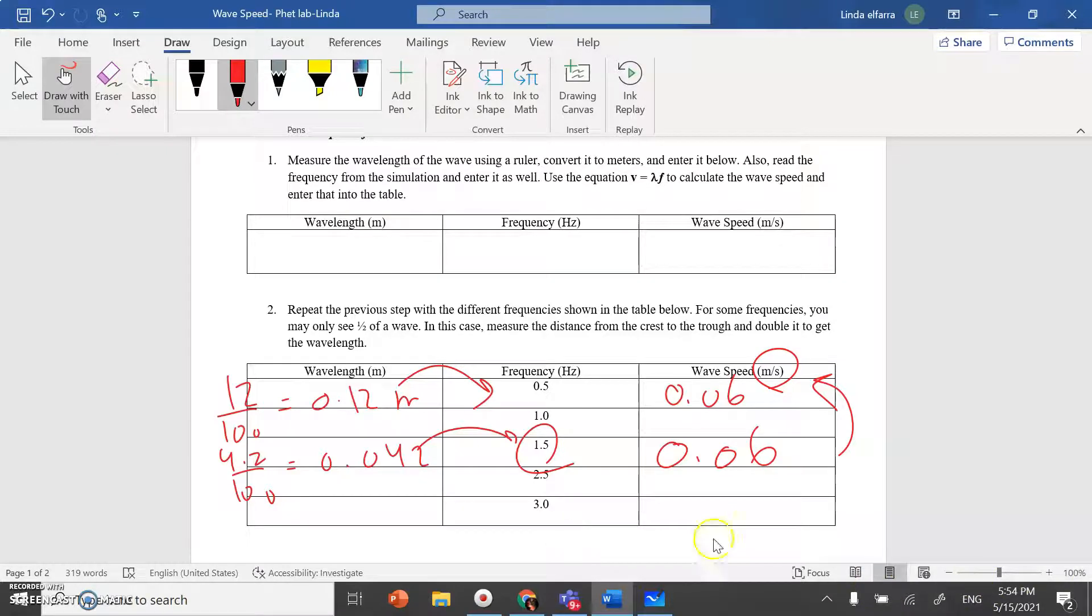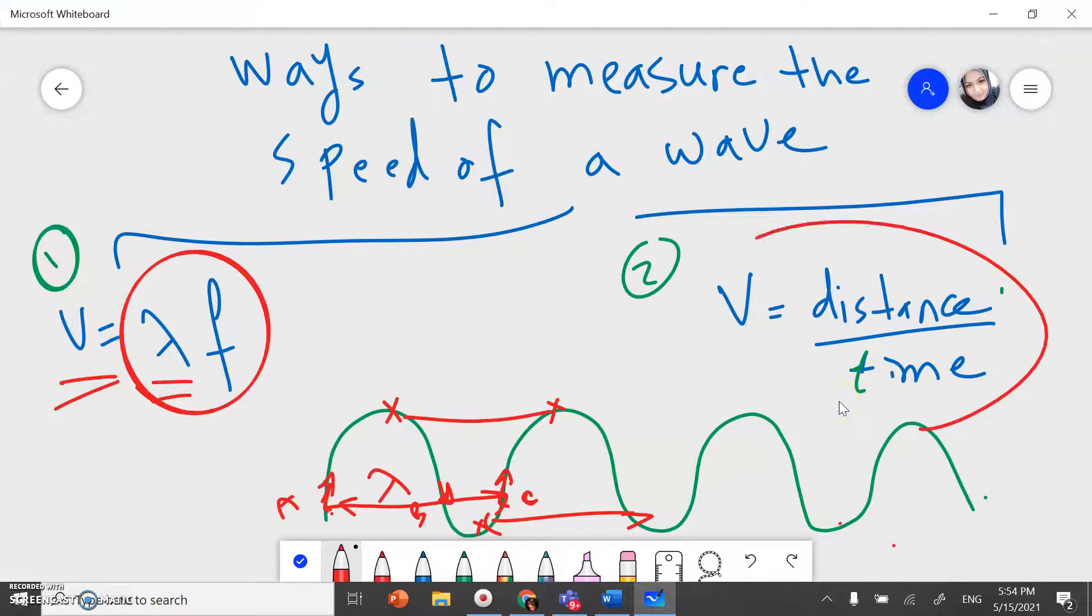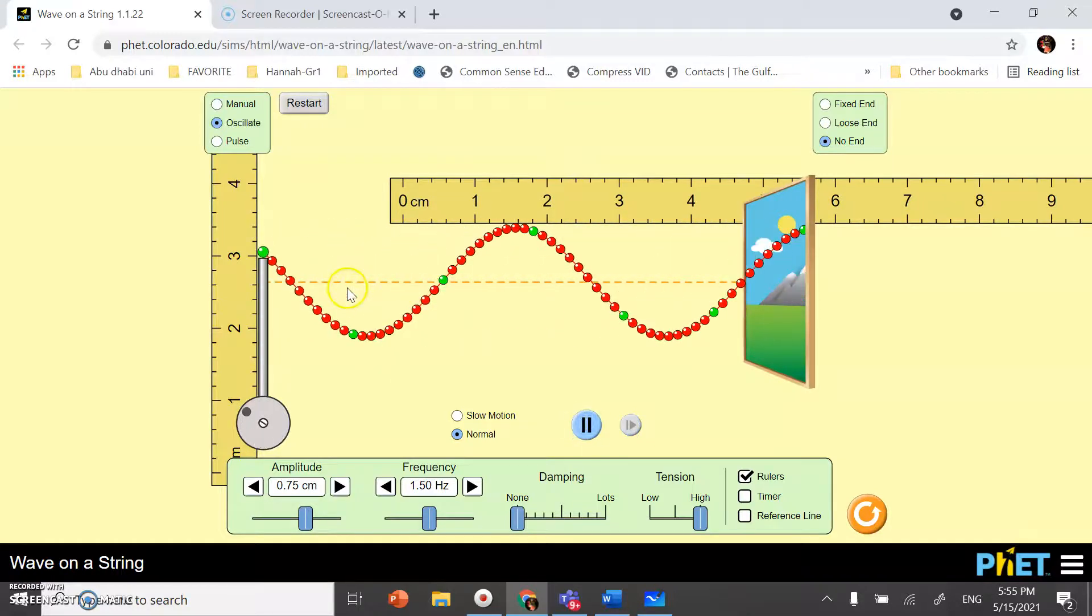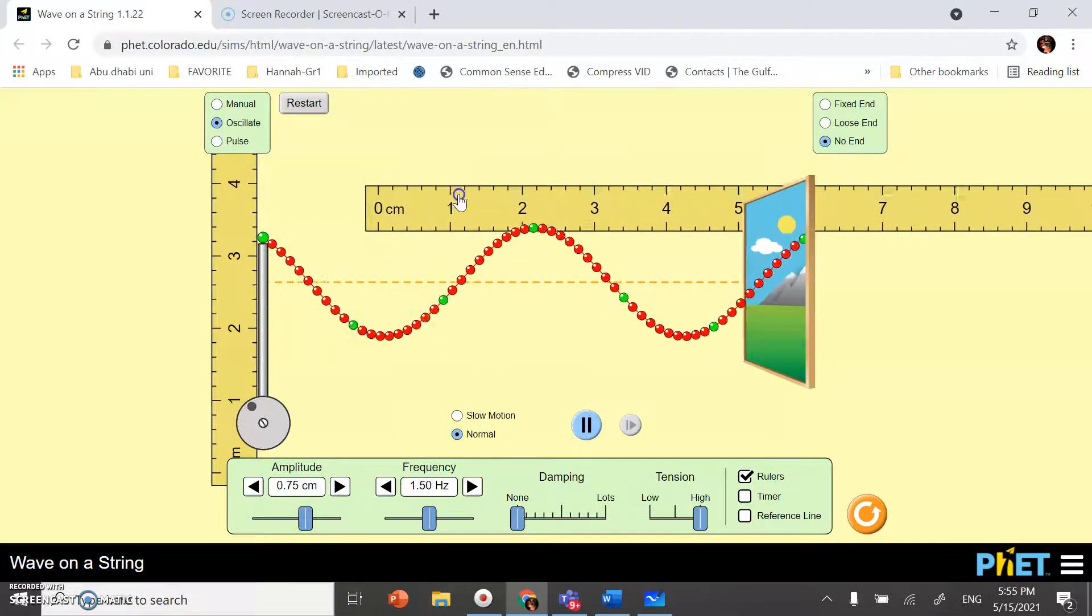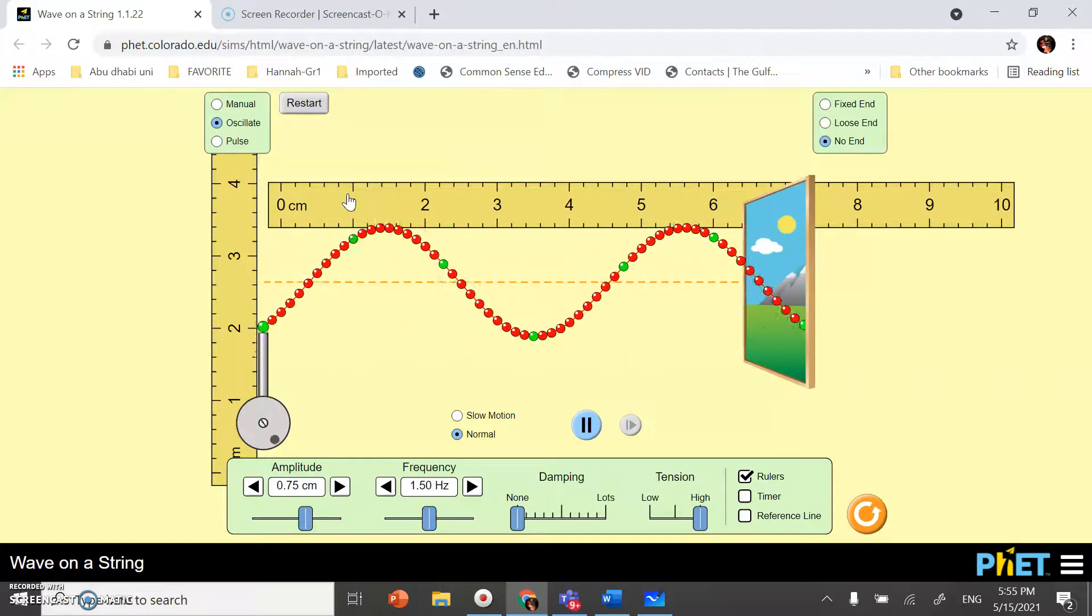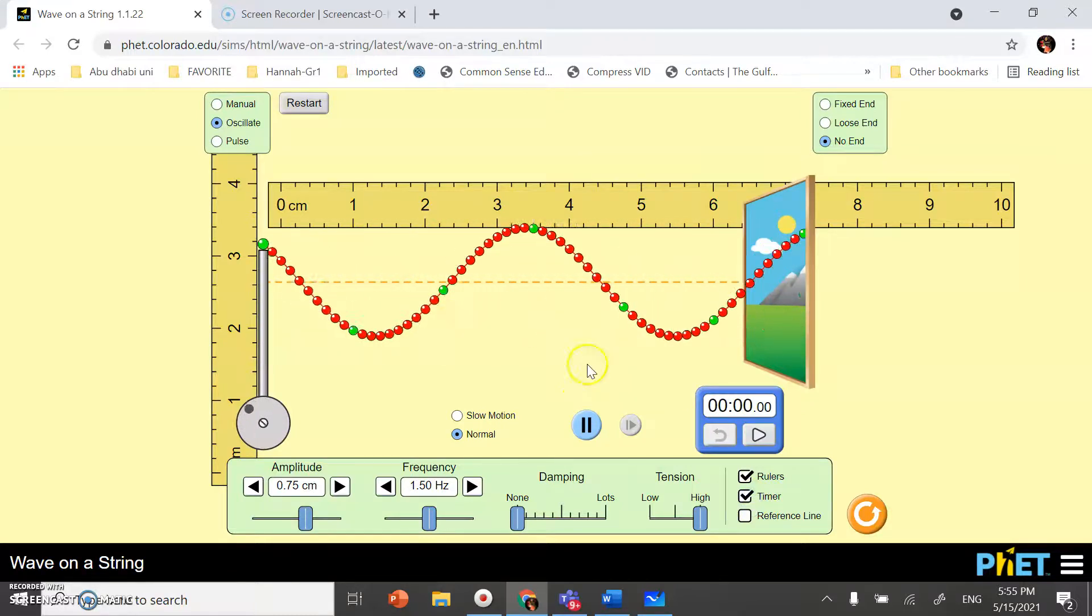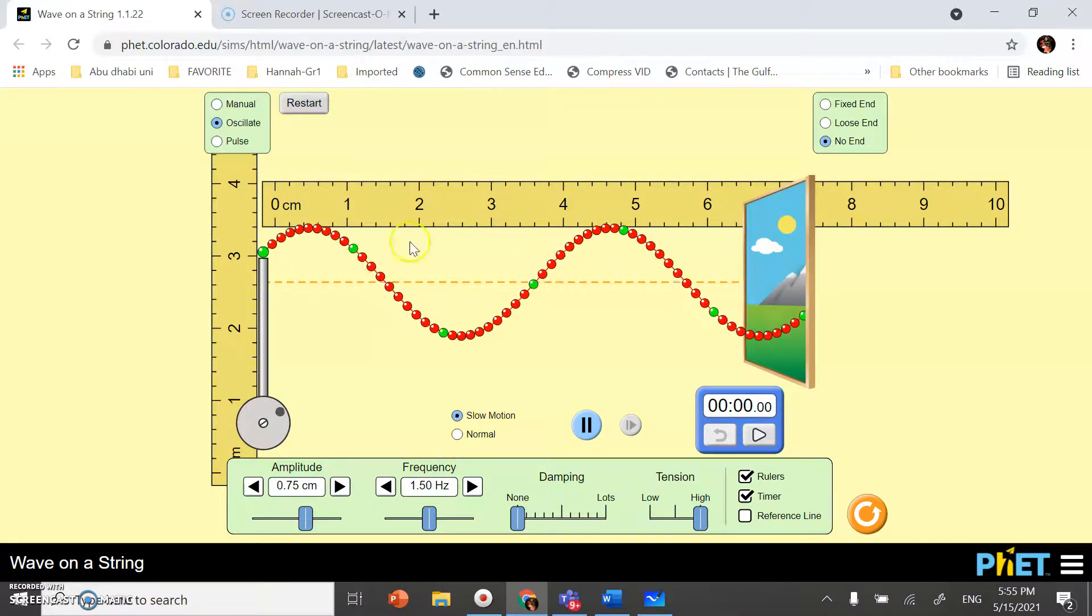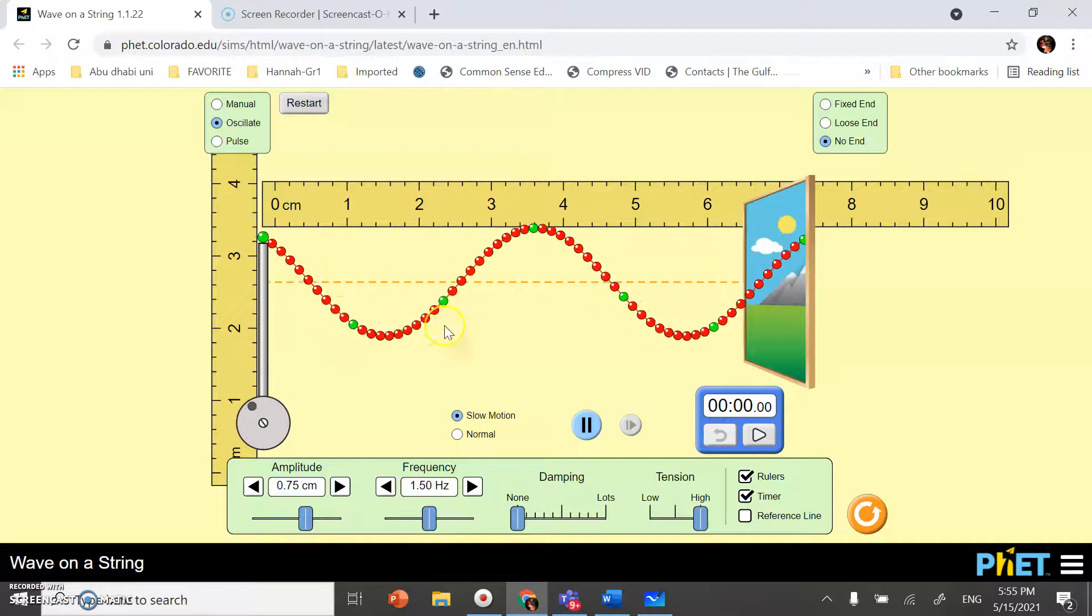This is the first method. Now, second method. I'm going to use this formula. Distance over time. Distance over time. For example, I want to measure the crest when the crest moves. 3 centimeter. Or, when the crest moves 4 centimeter. I have to measure the time. So, I have to put the timer here. I'm going to put it to slow motion.